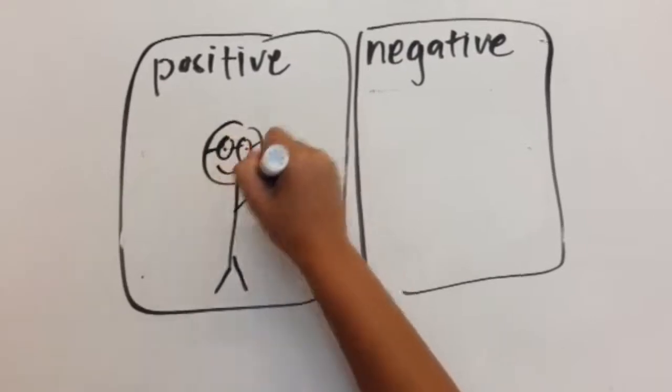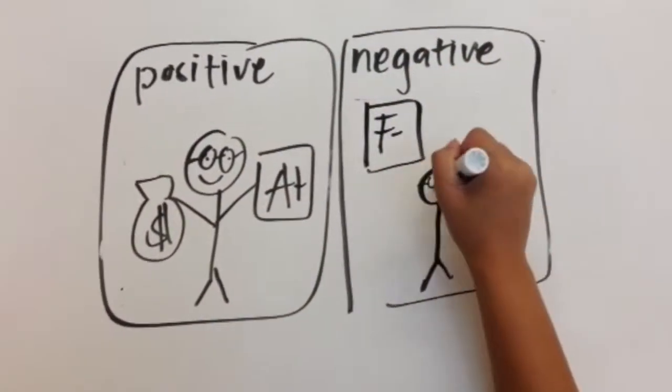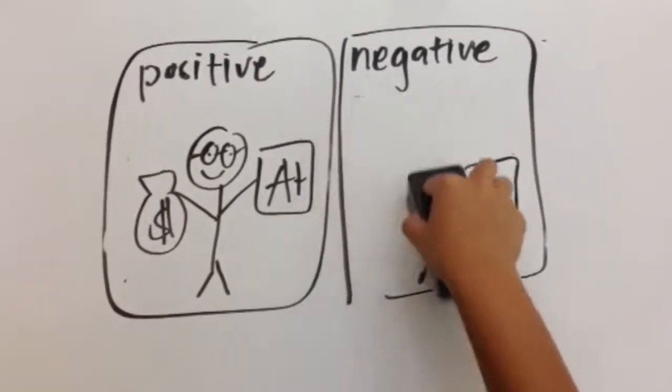Positive: teachers get paid for high test scores. Negative: instead, students might be getting bad test scores but the teacher can give the student a high score so they can get a higher pay.